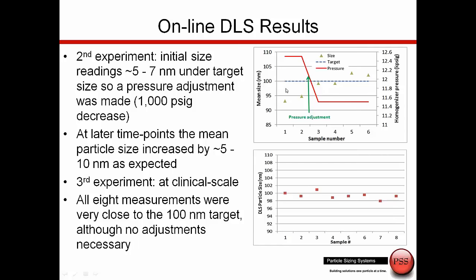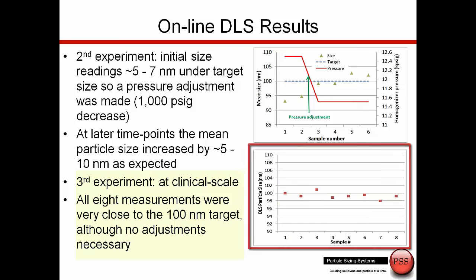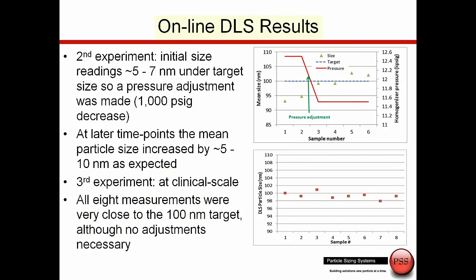Now that we understand this, we can start doing the next step, which is trying to go up to a clinical scale. At clinical scale, we understand the correlation between pressure and particle size very well. Throughout the batch run, all of the particles are very close to the desired 100 nanometer size range. These are very high value particles — we want all of them to be within specification. If we were taking samples to the laboratory and getting results, you wouldn't really be able to control this so that they're all within specification. But by doing these measurements online and continuously, we know for certain that 100% of this batch is directly within specification.